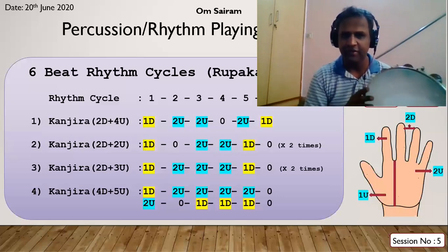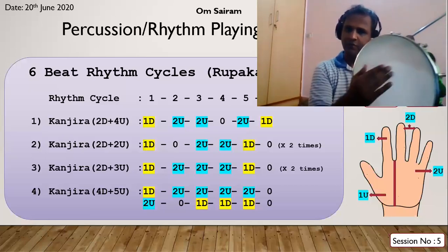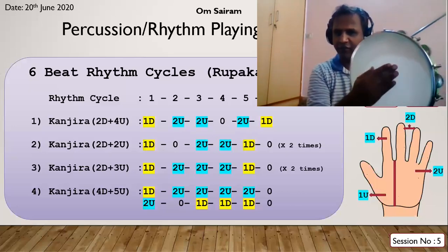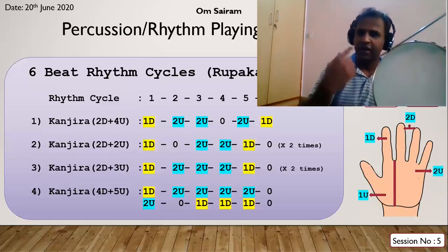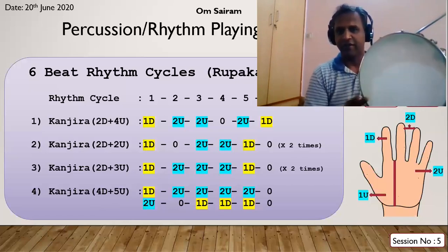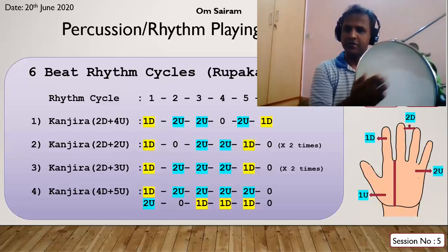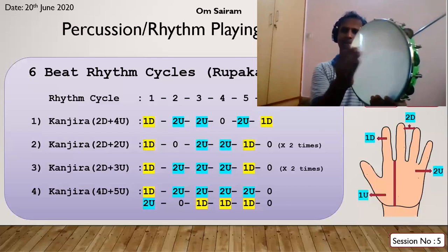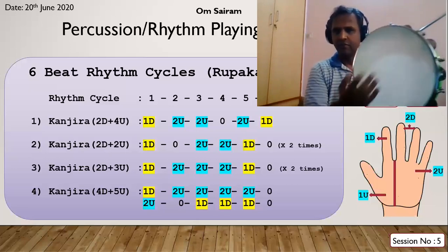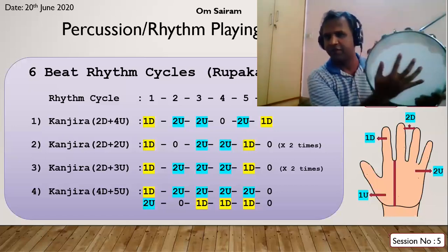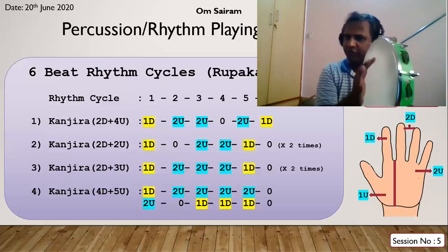The third beat pattern adds one more up-stroke in between the down and the first up. This is how it sounds - we'll do it slowly: one two three four five six, one two three four five six. Get it on a loop. I'm using the whole hand, all five fingers, stroking like this with a small hollow - not fully flat, but curved slightly.